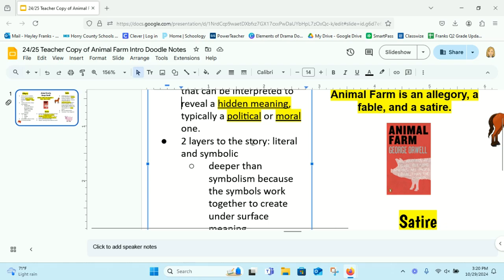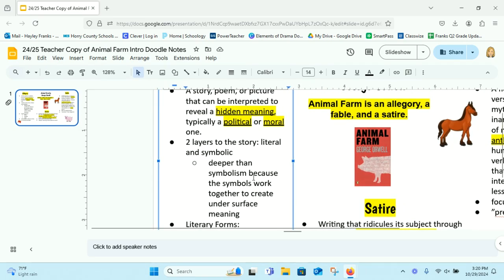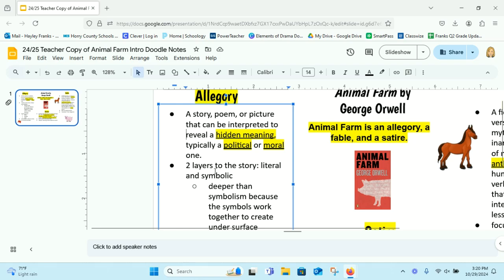There are two layers to the story. There is the literal layer and the symbolic layer. So we have to think, what is literally happening in the story? And then what is symbolically, what is that symbolizing? What is that standing for? What's that hidden meaning?